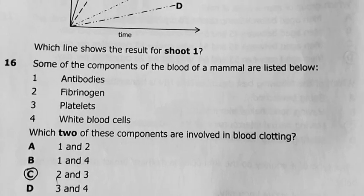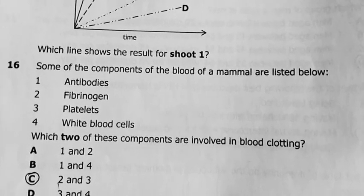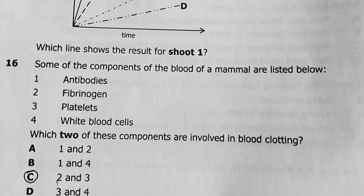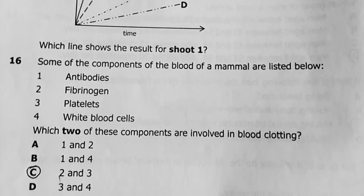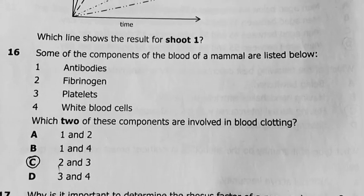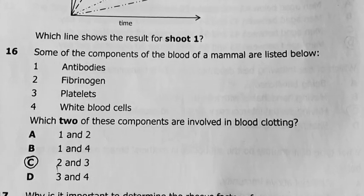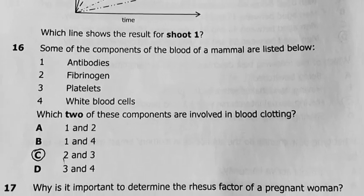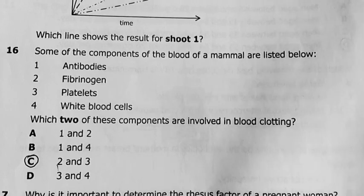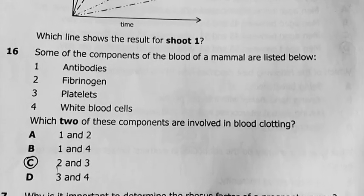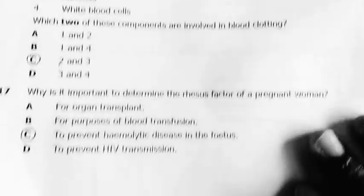Number 16, some of the components of blood of a mammal are listed below. Antibodies, fibrinogen, platelets, white blood cells. This is transport. The first topic in Grade 11 biology. Which two of these components are involved in blood clotting? Platelets and fibrinogen. My answer is two and three. So it brings us to C. Antibodies, this is all about immunity. White blood cells, WBCs, this is all about immunity, not blood clotting.